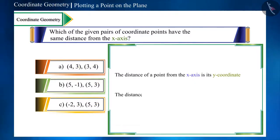And similarly, the distance of a point from the Y axis is its X coordinate. That is, the pair whose X coordinates are the same, those points will be the same distance from the Y axis.